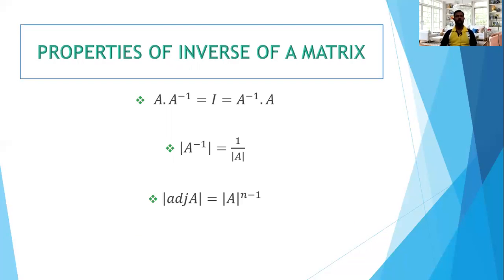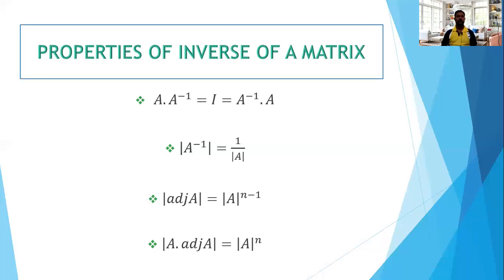Still to remember: determinant of adjoint A is determinant of A to the power n minus 1, where n is the order of the matrix. And determinant of A into adjoint A is determinant of A to the power n. Look at these last two carefully and don't get confused: determinant of adjoint A is |A|^(n−1), and determinant of A times adjoint A is |A|^n.